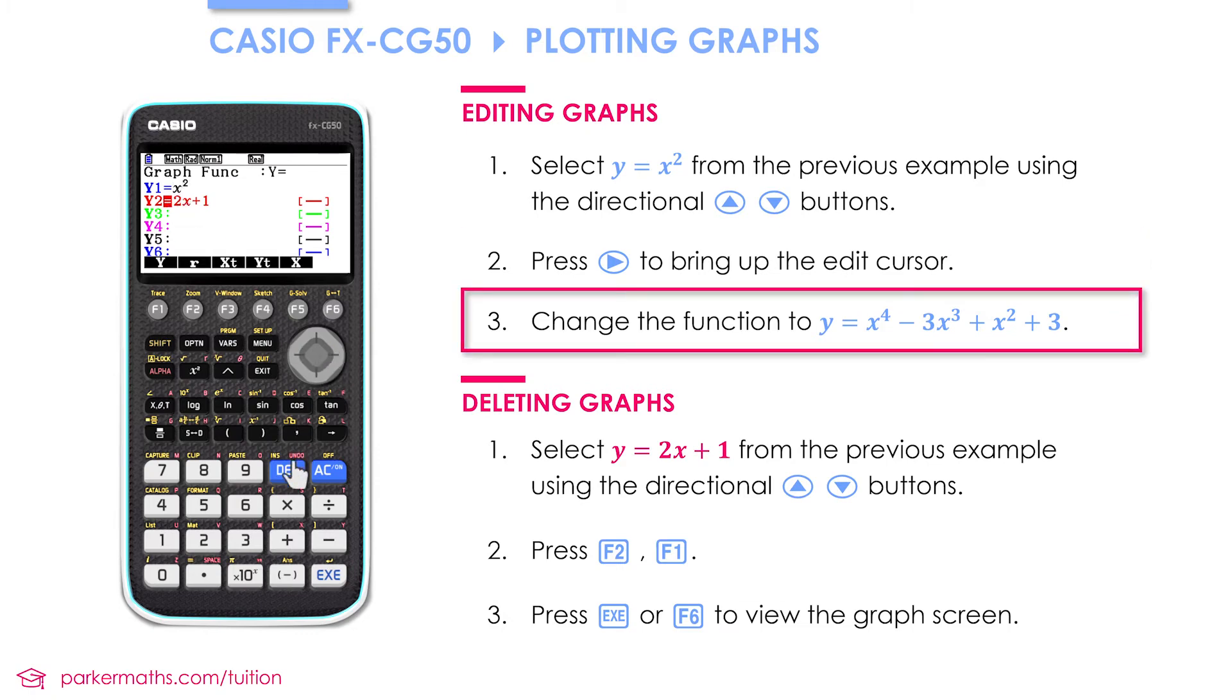Let's delete the X squared first. And now I'm going to enter this function here. Y equals X to the power of 4 and then minus 3X cubed. However before I press the minus sign notice that I'm inside the power here. So I need to press the directional arrow to come out of the power. And then I can enter the next part of the function. I have plus X squared plus 3.